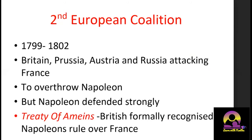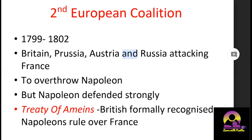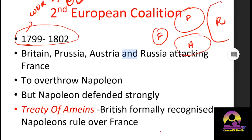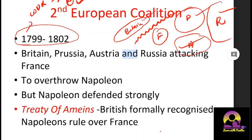The Second European Coalition occurred from 1799 to 1802. By 1799, the Court of Directory was removed and Napoleon had come into the picture. In the Second Coalition, all four neighbors — Britain, Prussia, Austria, and Russia — came together, made a coalition, and planned to attack France. The Anglo-French rivalry was always present, and this coalition was an added boost to that.